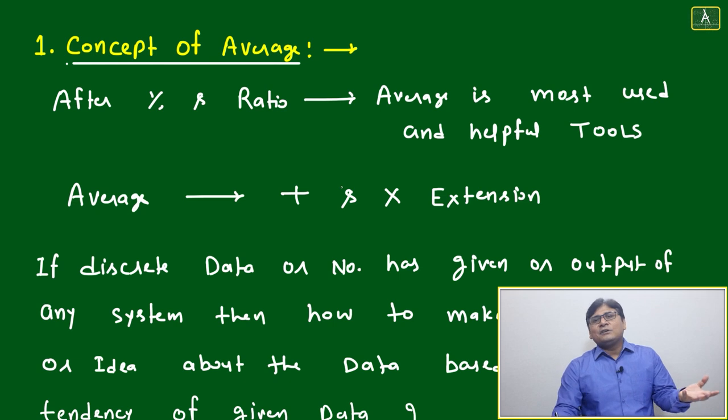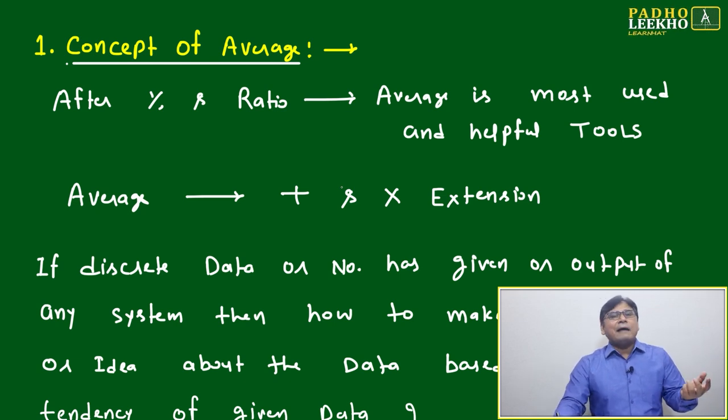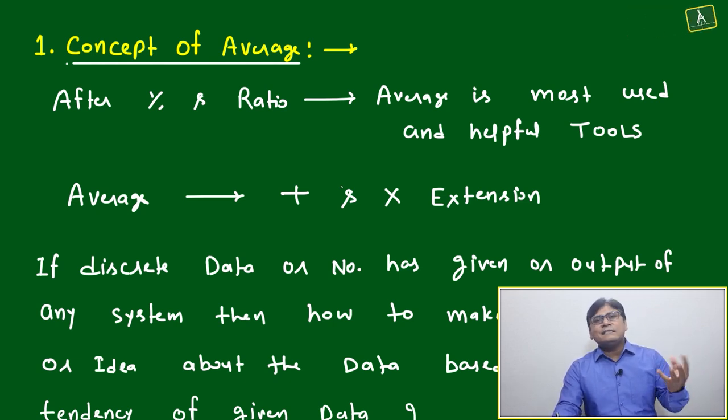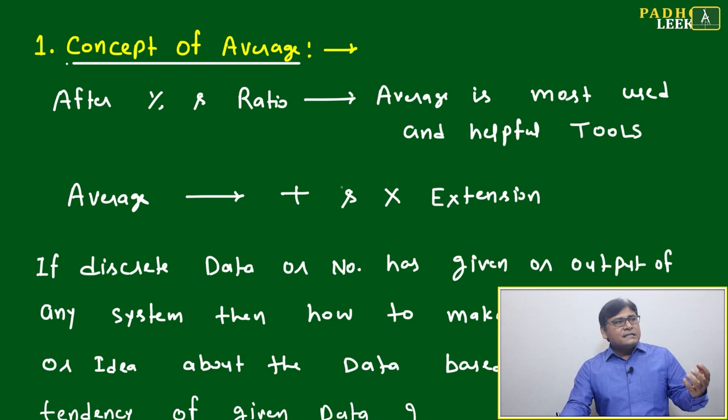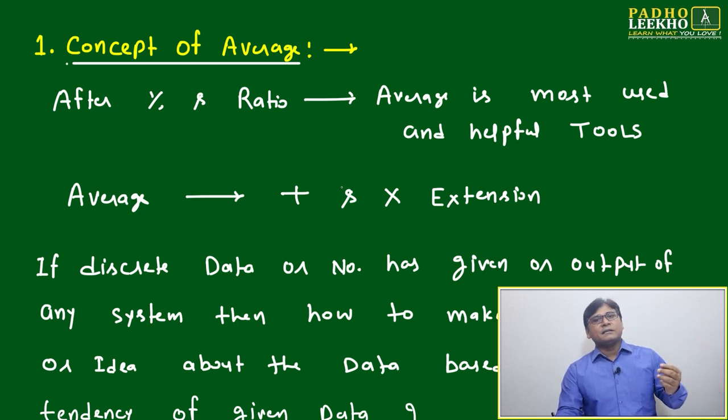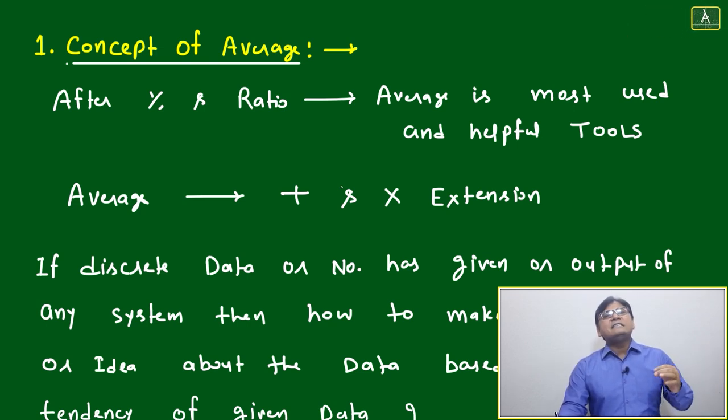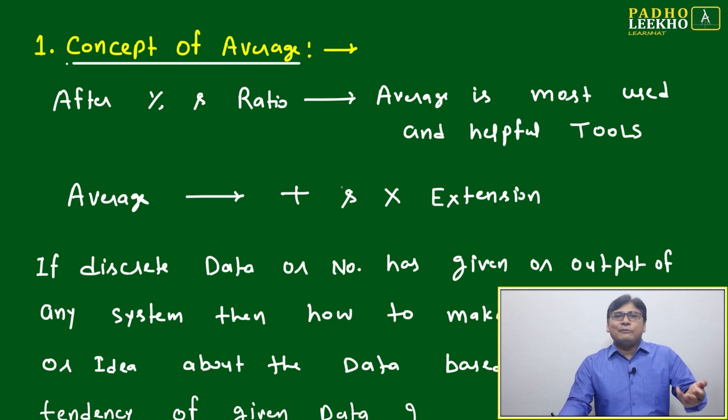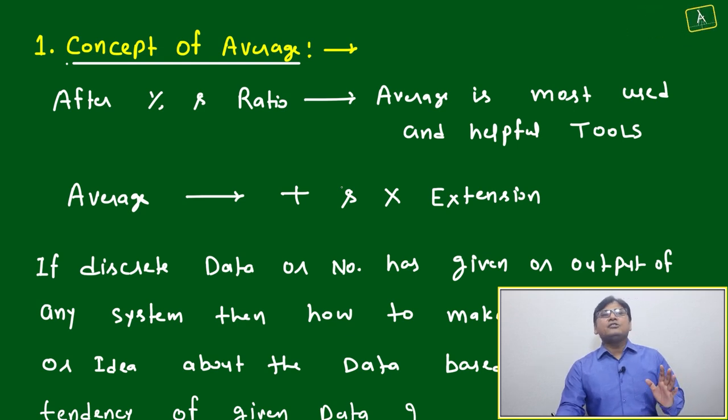One common concept is that average is very simple. If we ask how a student is performing, the feedback may come as average, above average, or below average. Average gives a mass idea about any group of students or class.